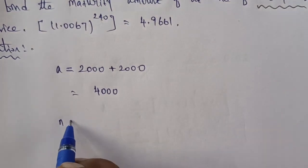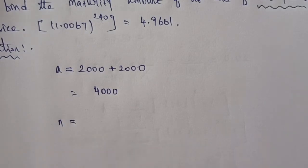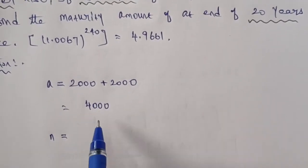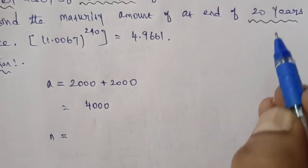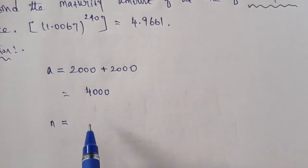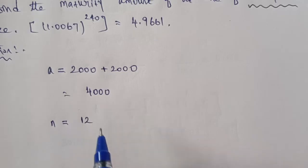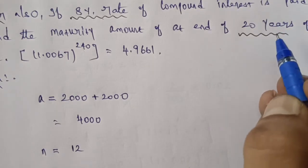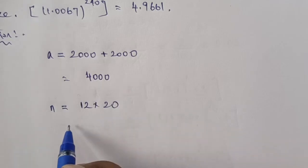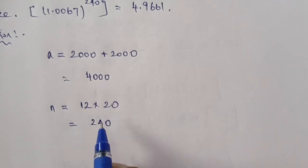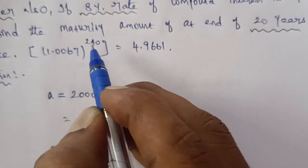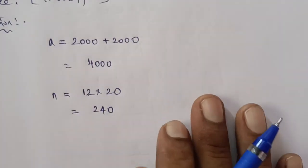Now, N is equal to - we are given 20 years. But which year has 12 months. So 20 years means how many months? 12 times 20. N is equal to 12 times 20 equals 240.